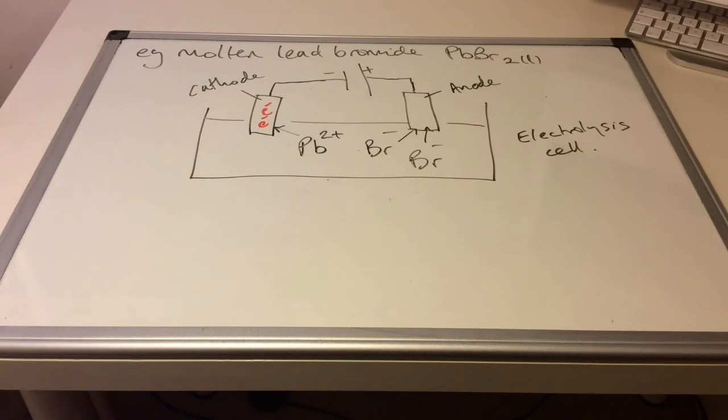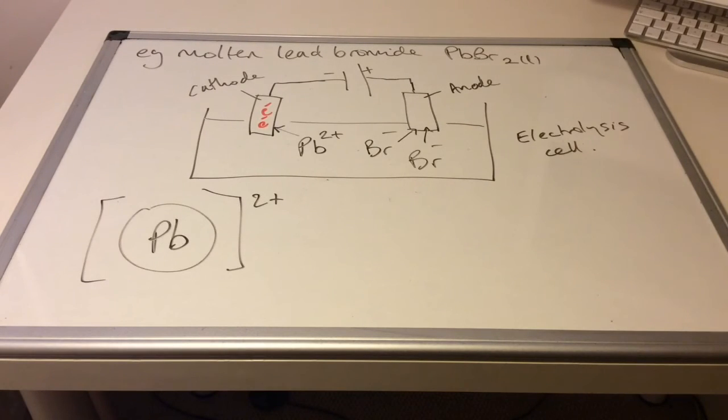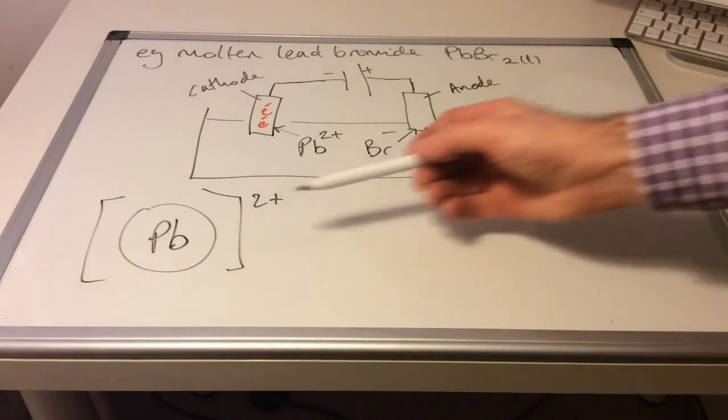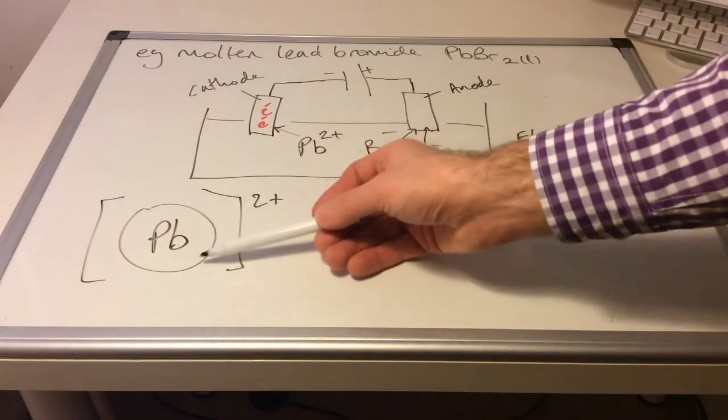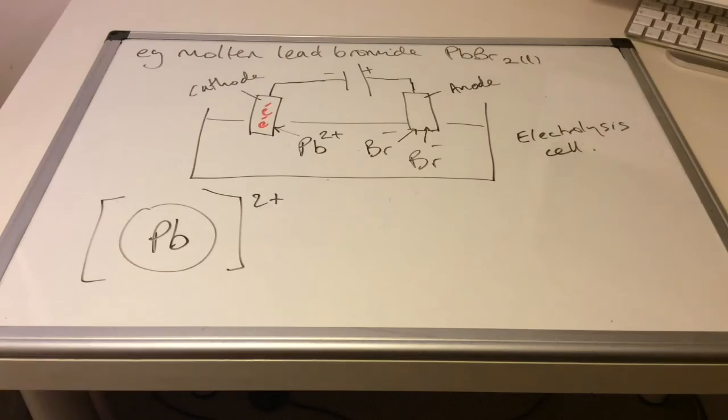So there they are there on their way to the cathode. Let's have a look at what happens there now. So there's the dot and cross diagram for a lead two plus ion.